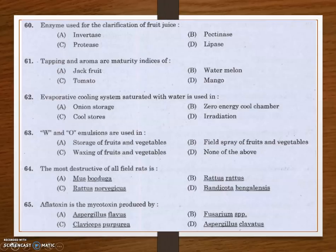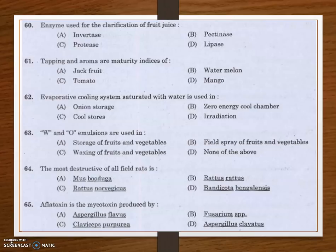Next question: aflatoxin is the mycotoxin produced by? Options are Aspergillus flavus, Fusarium species, Claviceps purpurea, and Aspergillus clavatus. The answer is Aspergillus flavus. Mycotoxins are secondary metabolites produced by fungi, and aflatoxin is a type of mycotoxin produced mainly by the Aspergillus group, particularly Aspergillus flavus.